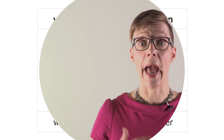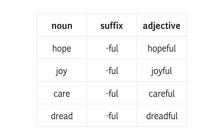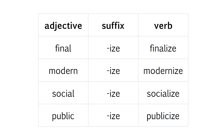If we start with an adjective like 'happy' and add the suffix -ness, we derive the noun that refers to the state of being that adjective: 'happiness'. Adding the suffix -ful to a noun derives an adjective like 'hopeful'. Adding the suffix -ize to an adjective like 'final' derives a verb like 'finalize'. Notice that each of the morphologically complex derived words is related in meaning to the base, but it has a new meaning of its own.